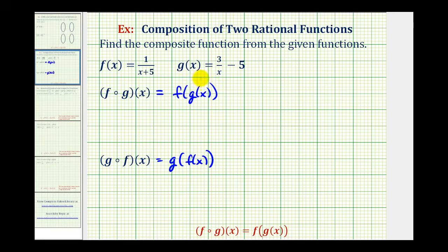So we'll start with the inner function. Notice there's no input into function g, so we're going to replace g of x with three divided by x minus five. So we can write this as f of three divided by x minus five.